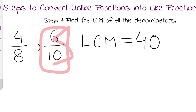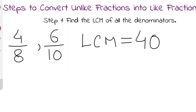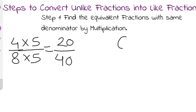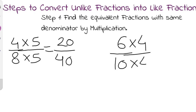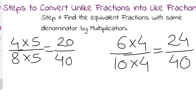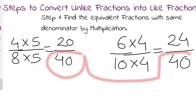So 6/10 multiplied by 4 on both numerator and denominator gives: 6 times 4 is 24, and 10 times 4 is 40, giving us 24/40. Now both fractions have the same denominator, so they are like fractions and we can perform our operation very easily, whether it is addition or subtraction.